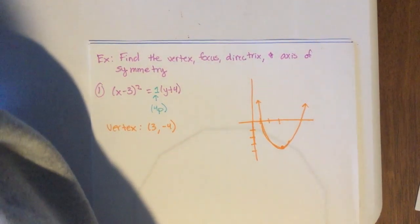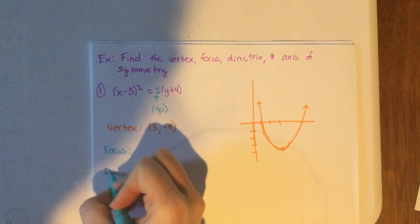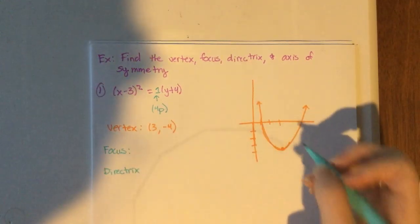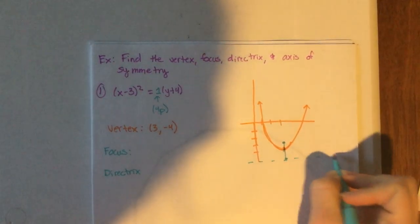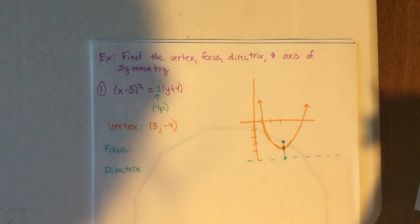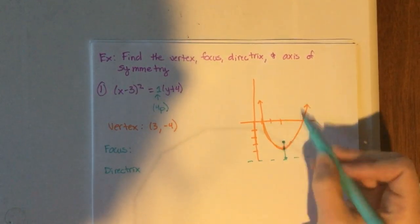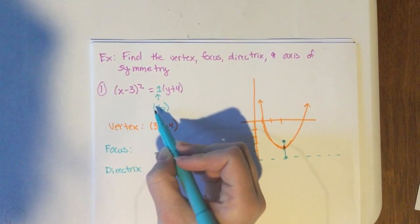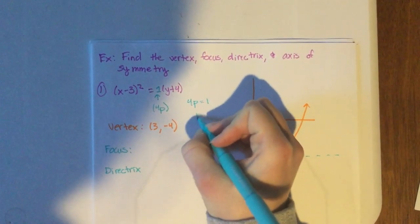The focus and directrix don't just appear directly in the equation — they come from the p value. P is the distance from the vertex to the focus and from the vertex to the directrix. The focus is always inside the parabola; the directrix is always on the outside in the opposite direction. Since 4p equals 1, we get p equals one-fourth.